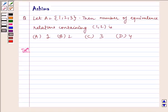Hello and welcome to the session. Let us understand the following problem today. Let A equal {1, 2, 3}. The number of equivalence relations containing (1, 2) is: (A) 1, (B) 2, (C) 3, (D) 4.